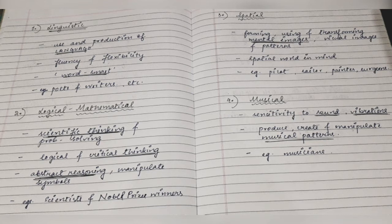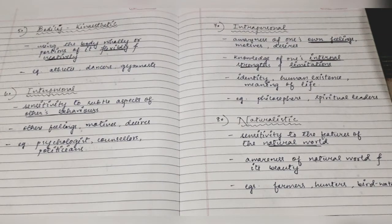The fifth type is Bodily-Kinesthetic Intelligence. Persons high on this type of intelligence use their body wholly or portions of it flexibly and creatively in order to achieve a solution to a problem or attain their required output. Dancers are a very notable example — they use their body and body parts for different types of dance movements. We also see athletes and gymnasts who are high on this type of intelligence.